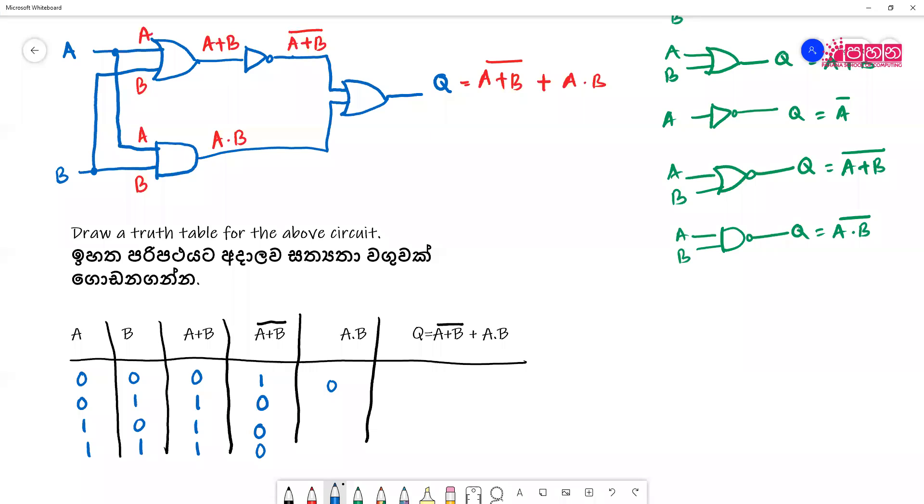Then we have multiplication, so A dot B when you multiply, so this becomes zero. Second one is also zero because it's zero and one. When you multiply one and zero we will get zero. Finally one and one, so this is what we will get.